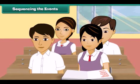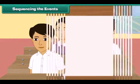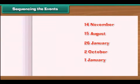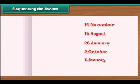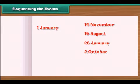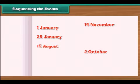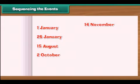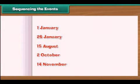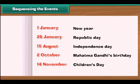Sequencing the events: Anu is at school and has listed some important dates in a jumbled manner. Let us help her arrange the days in the order they come in the year: first New Year's Day, then Republic Day, then Independence Day, followed by Mahatma Gandhi's birthday, and lastly Children's Day — the birth date of our first Prime Minister, Pandit Jawaharlal Nehru.